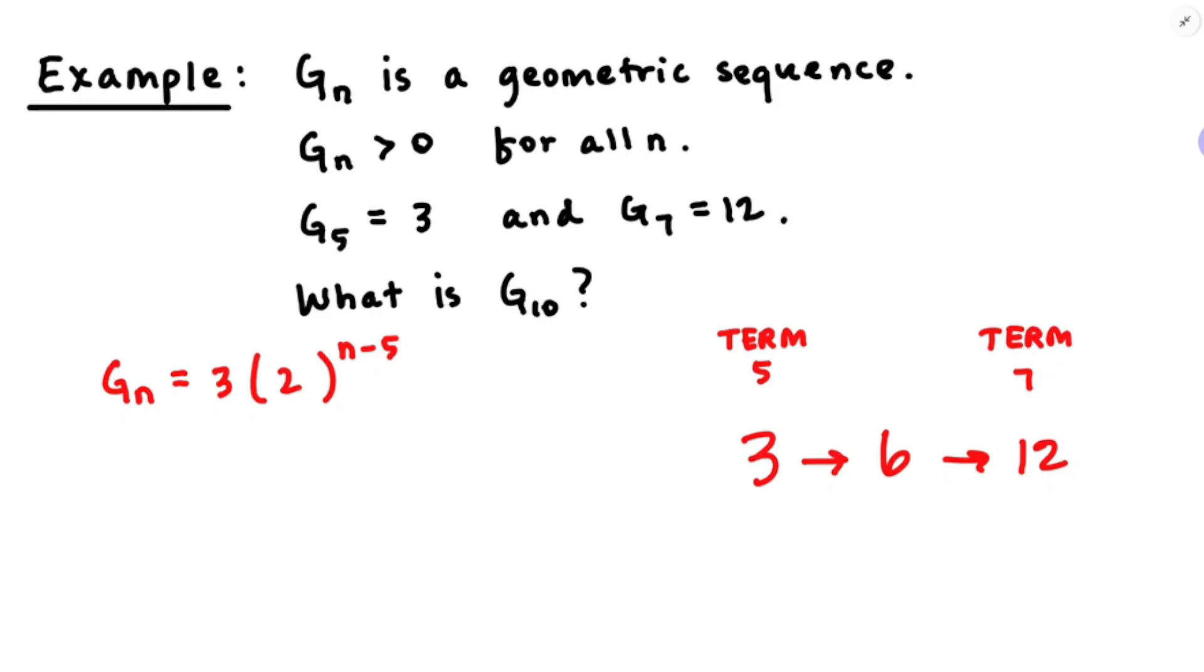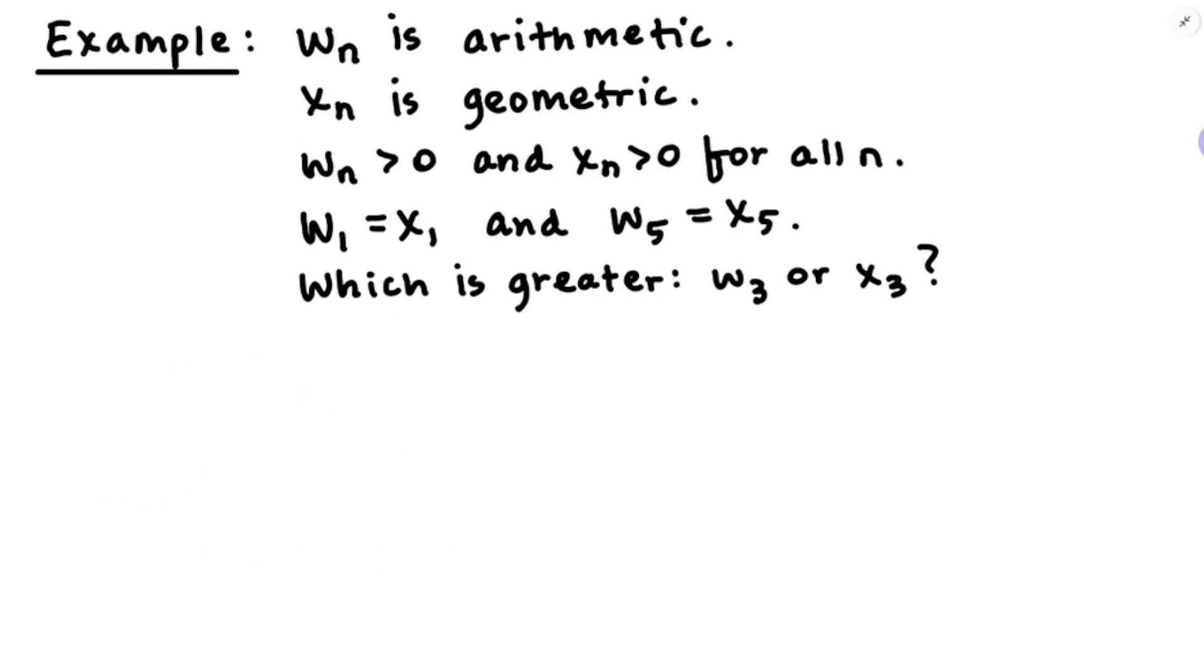So that ratio is going to equal 2. And I think at this point, you could just multiply by 2 three more times. That's probably what y'all would do. What I think I'm supposed to show you to do is to plug in 10 for n. 3 times 2 to the 10 minus 5, which is going to be 3 times 32, which will be 96.